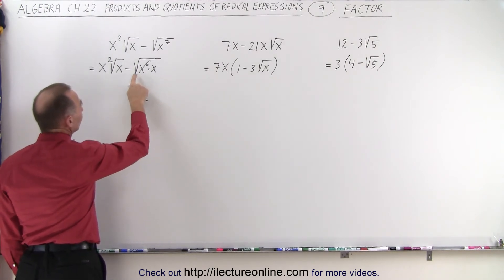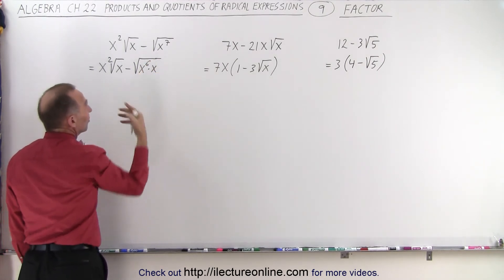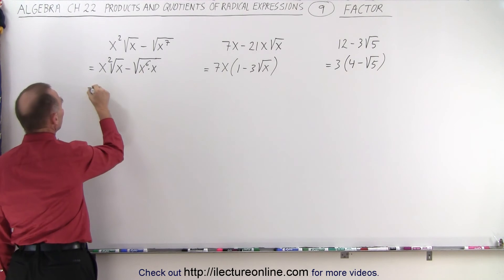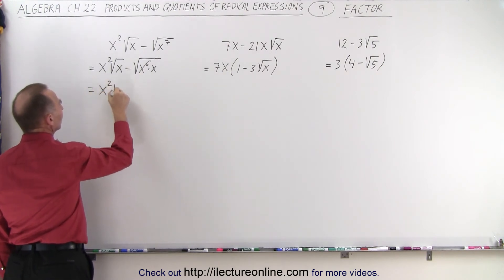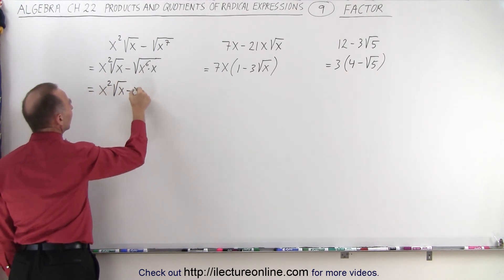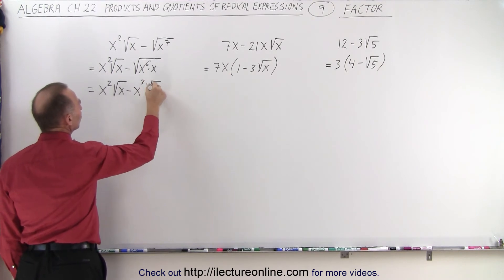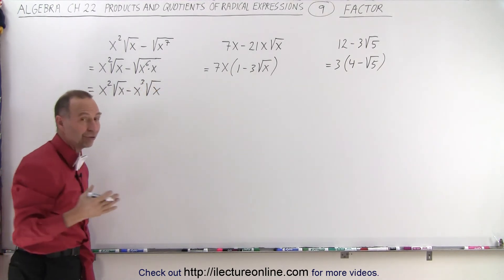Now here, we notice that the square root of x to the sixth is the same as x cubed. So this can be written as x squared times the square root of x minus x cubed times the square root of x. And now we're ready to factor.